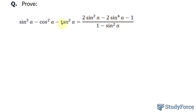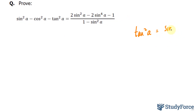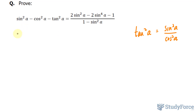I notice that I have tan squared A. Tangent is the same thing as sine squared A over cosine squared A. So I'll replace tan squared A with that identity.